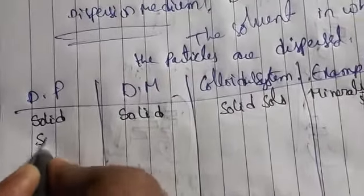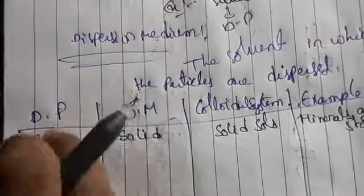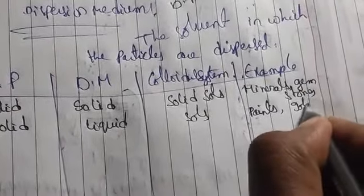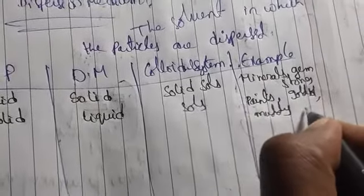In the next example, if dispersion phase is solid and dispersion medium is liquid, it forms sols. Examples are paint, gold solution, and muddy water. When rain falls on mud — the liquid is rain and the solid is mud — they form a dispersion, with the liquid in large excess and solid particles minute within it.